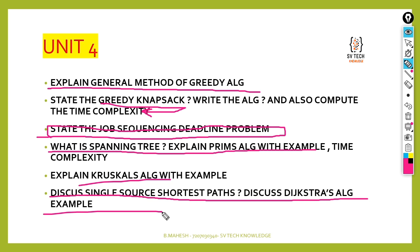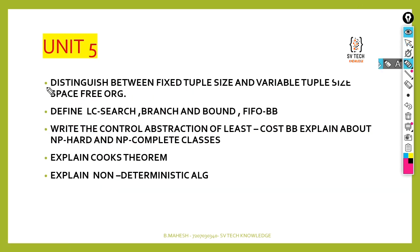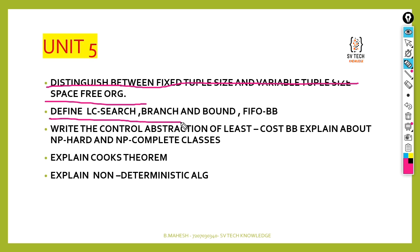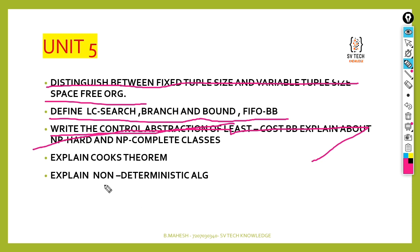The fourth unit is very simple — concentrate on it for marks. For the fifth and final unit: distinguish between fixed triple size and variable triple size space organisation — this may also come as a short question. Define LC search, branch and bound, and FIFO branch and bound. Write the control abstraction of least cost branch and bound. Explain NP-hard and NP-complete classes. Explain Cook's theorem. Finally, explain deterministic algorithms. These are the important questions from the DAA subject — please do subscribe.